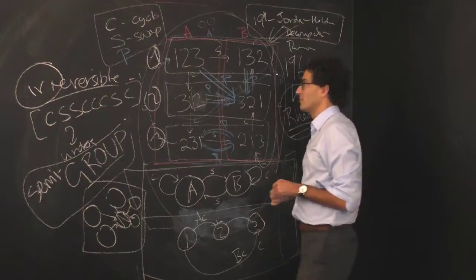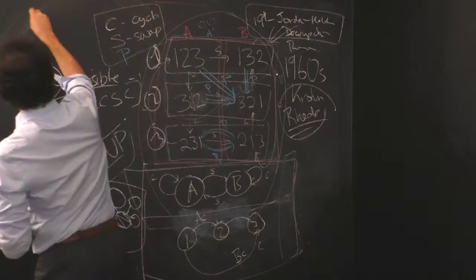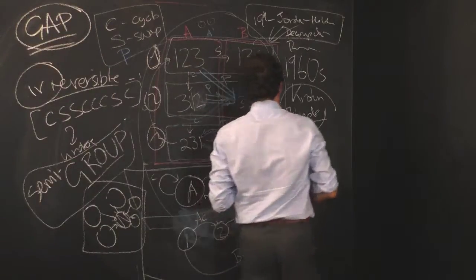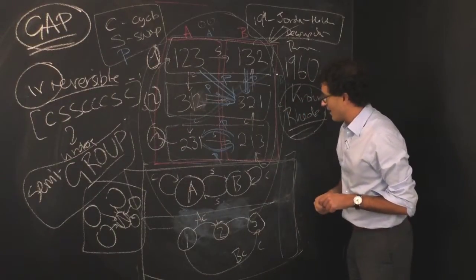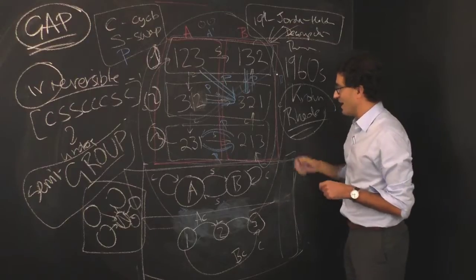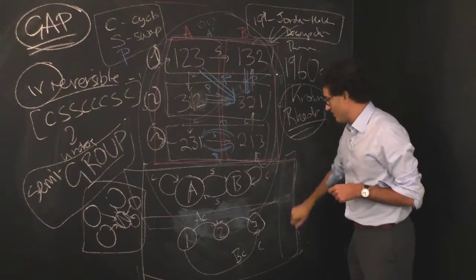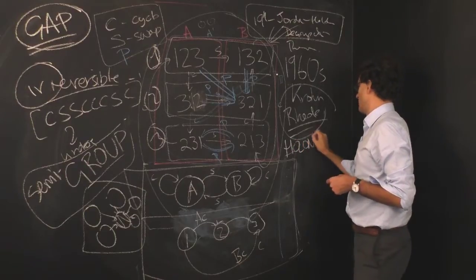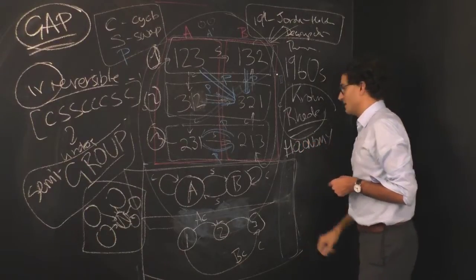And so there's a beautiful algebraic package called GAP, and a colleague of mine, Attila, has figured out a way to make GAP spit out the other side. A series of these, what are called, holonomy decompositions.